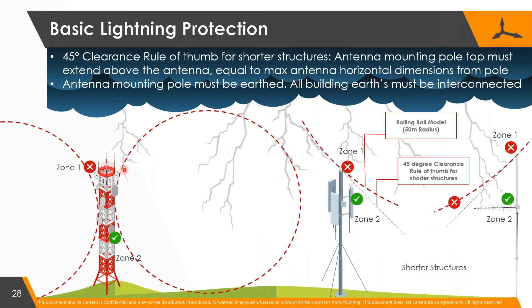Using the rolling ball model again: if the mast is high - say 60 to 70 meters or more - you have to start protecting things on the side. You can put a horizontal spike out there so the ball can't touch the antenna, in which case lightning won't hit it. Just being above the top is not good enough on taller units. On smaller units the ball roughly forms your 45-degree line and just having the protection higher than the antenna is good enough. For small structures like rooftop masts, the mast should extend above the antenna by the same amount that the antenna extends horizontally away from the mast.